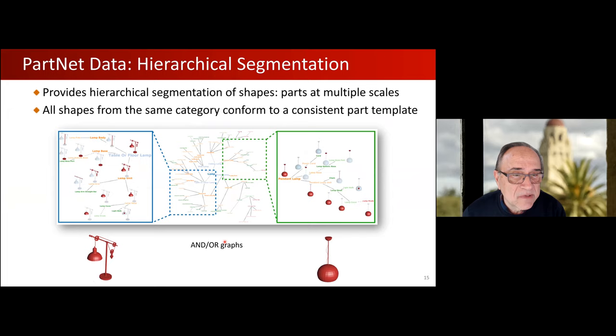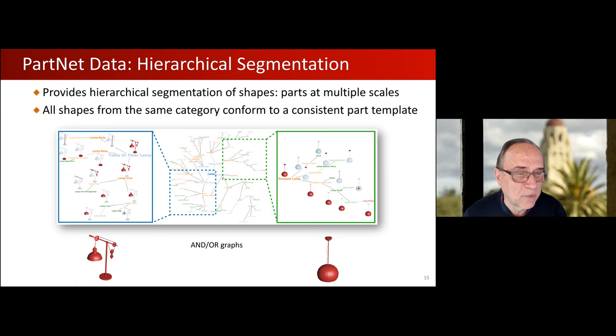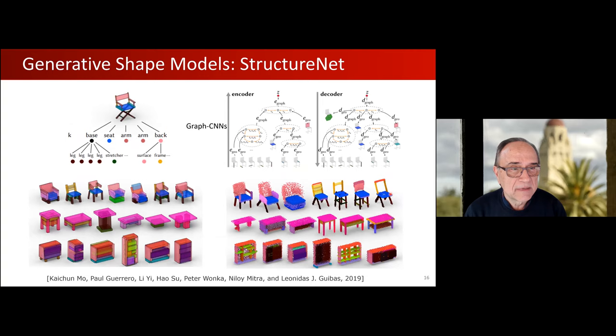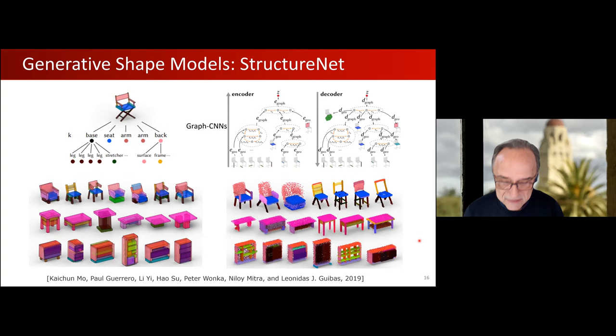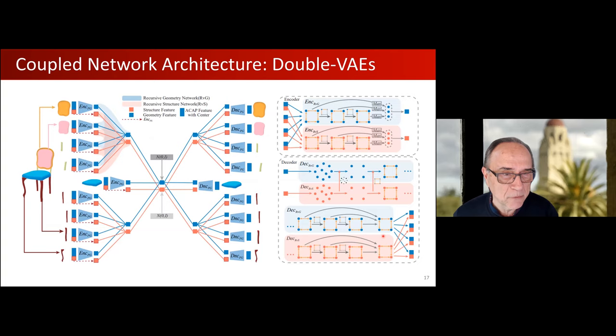In PartNet, we have hierarchical segmentation of various semantic classes of objects. I show here the hierarchy for the class lamp — this is an AND-OR graph, so the OR nodes allow alternate structures, meaning both a desktop lamp and a ceiling lamp can both be fit into one hierarchy. Once we have these hierarchical structures, we can use them to create new shapes that look just like existing shapes by using graph neural networks. One can combine the structure and the geometry in two parallel networks that communicate with each other so that we can generate new geometries and vary structure and local shape independently.